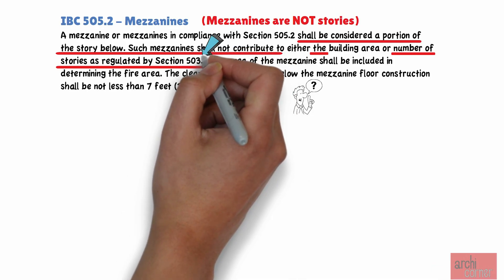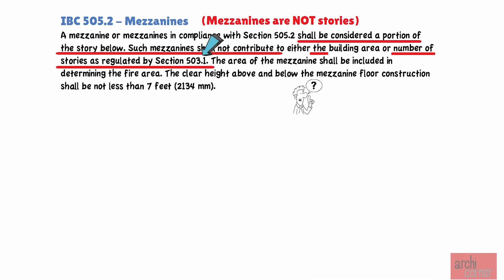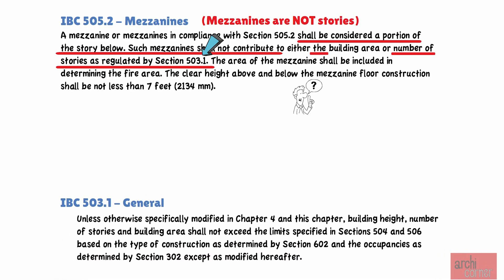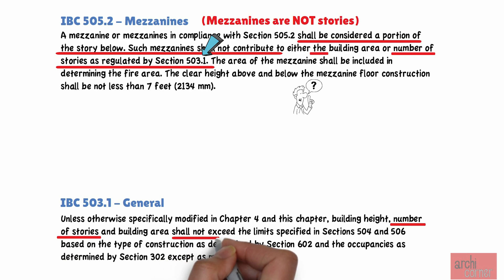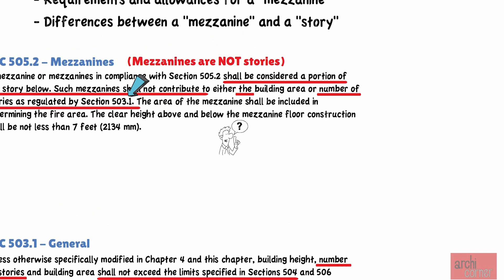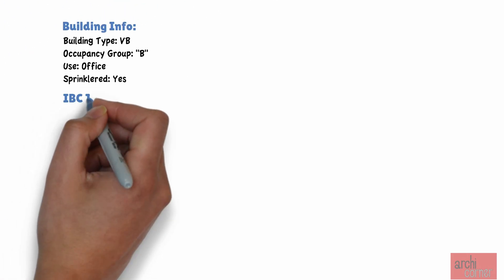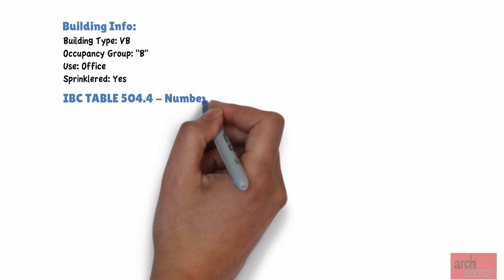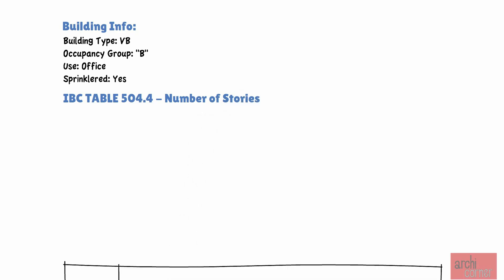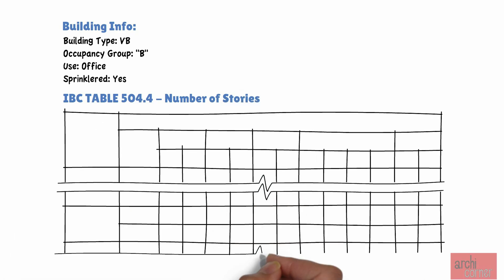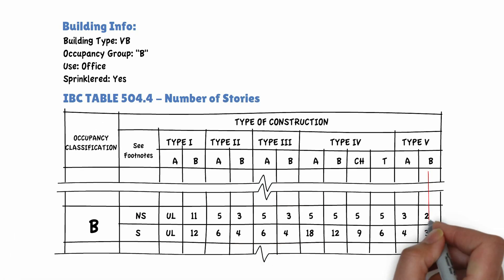If we look at the section noted in the code we just read, section 503.1, in part, this code section states, number of stories shall not exceed the limit specified in section 504. So let's do that. Let's look at IBC table 504.4 titled number of stories. Given the building information noted above, the allowed number of stories is three.